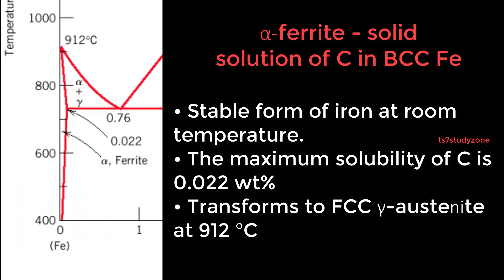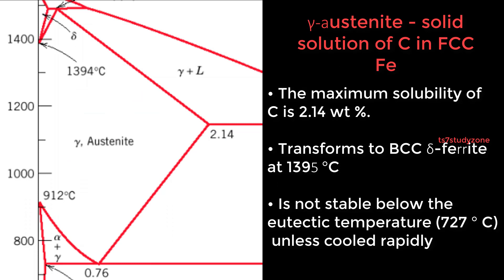Gamma austenite is a solid solution of C in FCC Fe. The maximum solubility of C is 2.14 weight percent. It transforms to BCC delta ferrite at 1395 degrees Celsius and is not stable below the eutectic temperature of 727 degrees Celsius unless cooled rapidly.